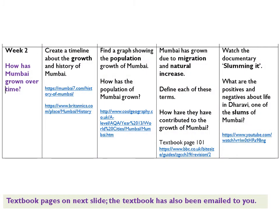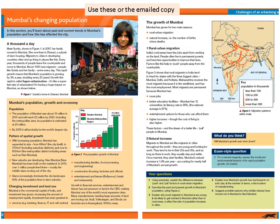This week's tasks are: to create a timeline about the growth and history of Mumbai; to find a graph showing the population — you can use the graph from the Cool Geography website included in this PowerPoint; to look at migration and natural increase, define the terms and look at how they've contributed to Mumbai's growth; and lastly to watch 'Slumming It' and make notes about positives and negatives. The textbook has been emailed to you, but textbook pages are also on the next slide. Good luck, and I'll be giving you another PowerPoint for next week. Thank you very much.